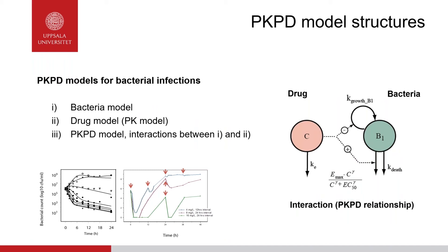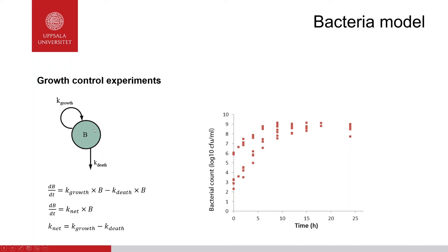Modeling is used as a tool to transform data from time-kill experiments into a mathematical representation that can be used for translational purposes. The basic PKPD model structure typically consists of three parts: one describing the bacteria, one describing the drug, and one describing the interaction between drug and bacteria. The simplest bacteria model consists of a single bacterial compartment with a first-order rate constant for multiplication or growth and a first-order rate constant for death. Often the data is insufficient to separate these two rates, so only the net growth rate is estimated.